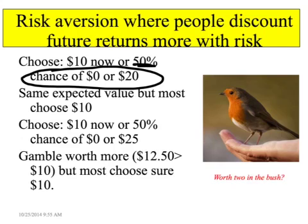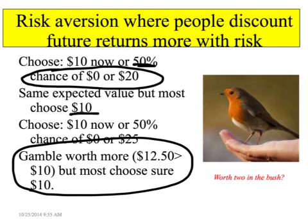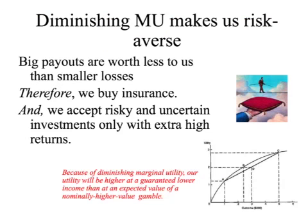Most people, however, will choose the $10 over the equivalent expected value. In fact, most people would choose less than $10 over that 50% risk. People would often choose $10 now instead of a 50% chance of $0 or $25, even though the gamble of $0 or $25 is an expected value worth more.